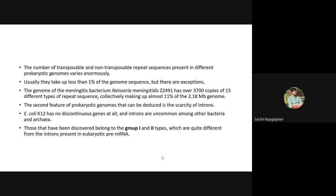Usually, the amount of space that they occupy in the prokaryotic genome is normally less than one percent. But in some cases, they may have a larger occupancy in the genome — greater than one percent. For example, the genome of the meningitis bacterium Neisseria meningitidis strain Z2491 has over 3,700 copies of 15 different types of repeat sequences, which collectively occupy around 11% of the 2.18 Mbps genome. That's a huge amount of space.